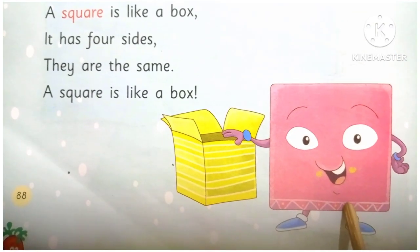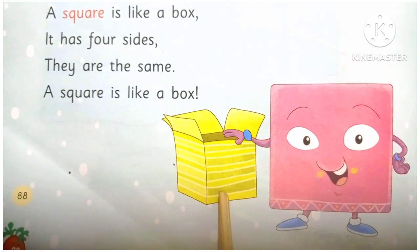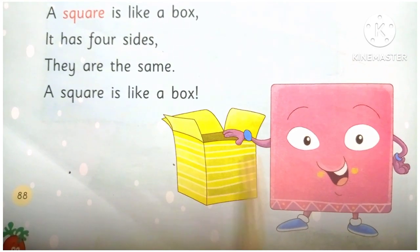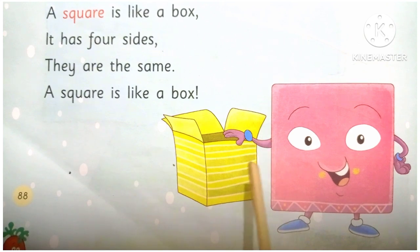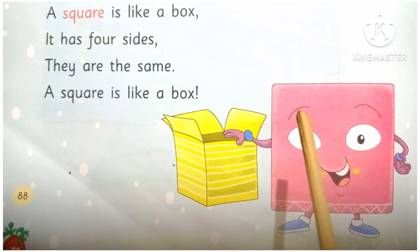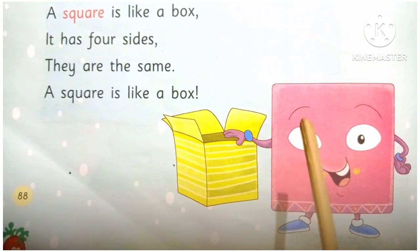A square is like a box. It has four sides. They are the same.